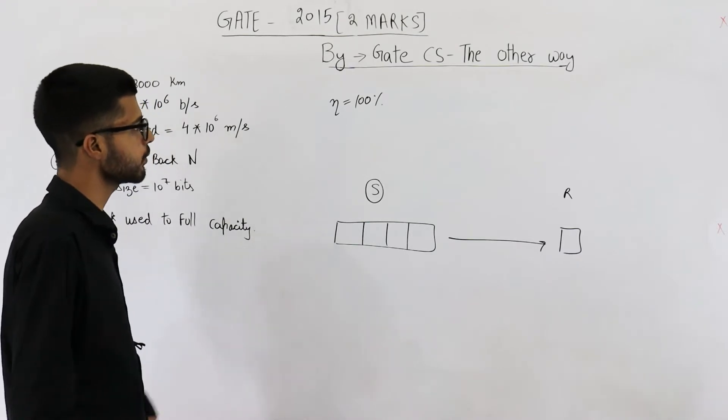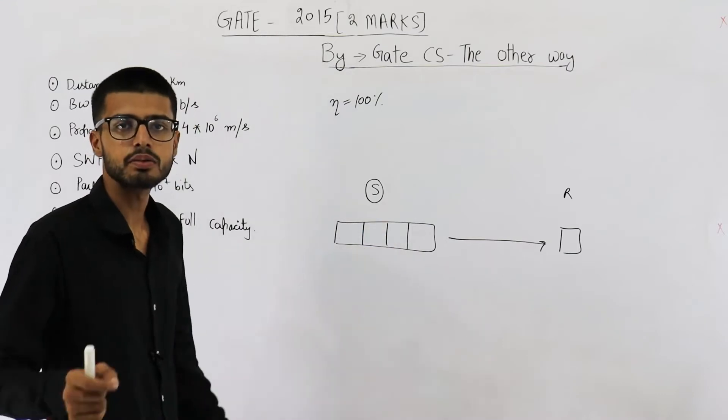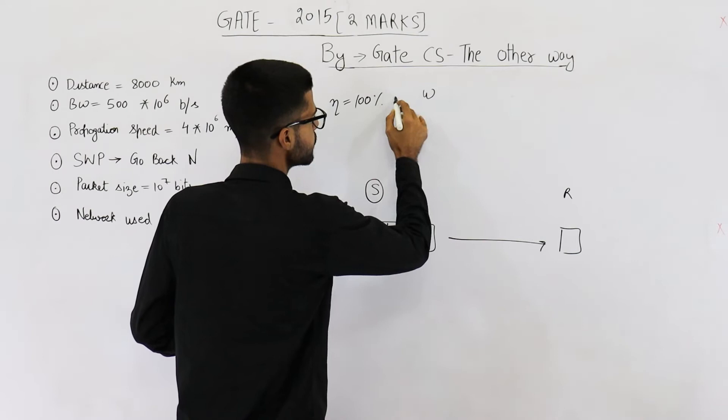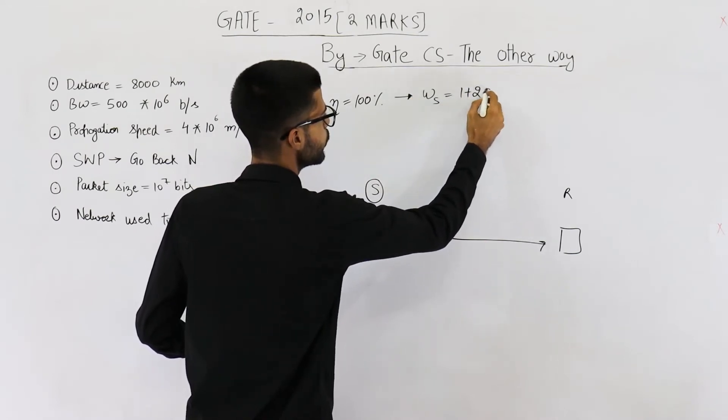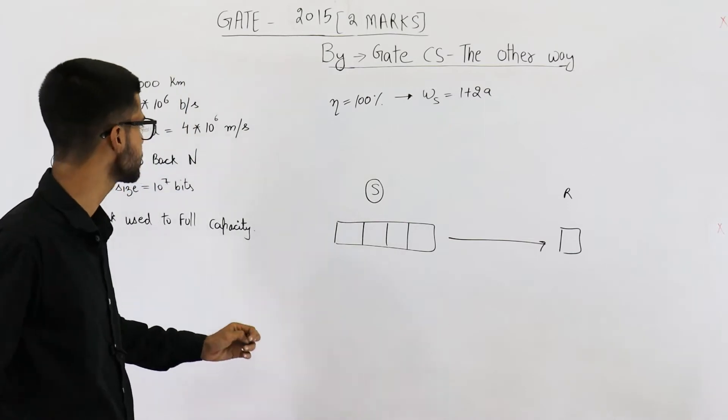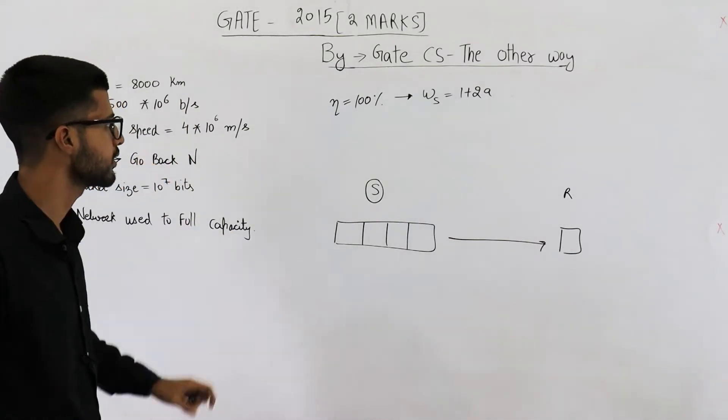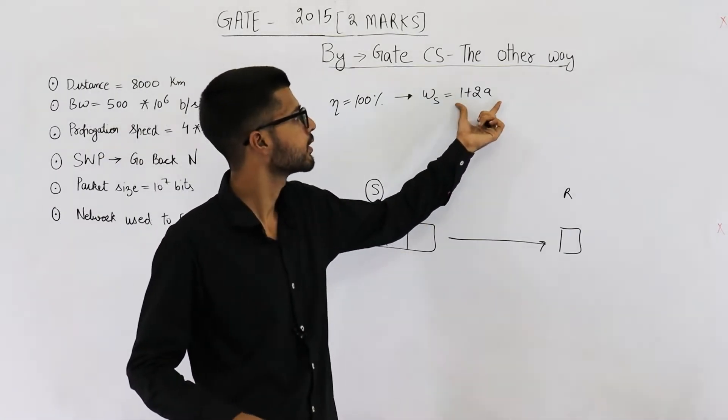Now for 100% efficiency, the condition is sender window size must be of 1 plus 2a packets. Ws must be 1 plus 2a packets. That means it is actually go back 1 plus 2a. Value of n is 1 plus 2a. Let us find the value of a for determining this.